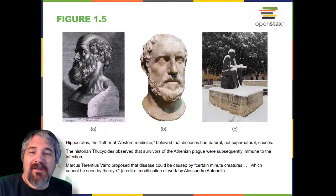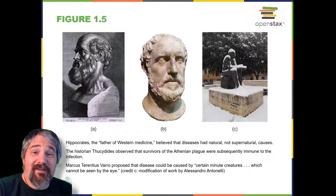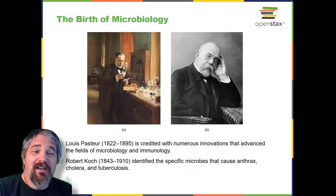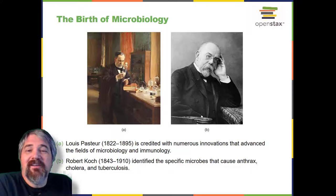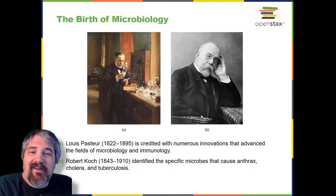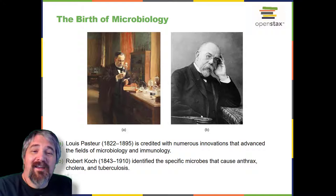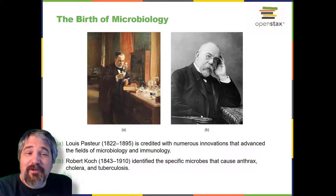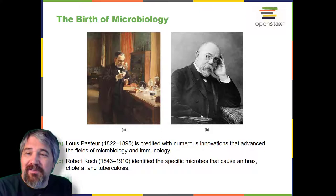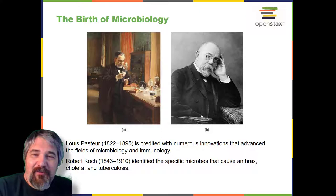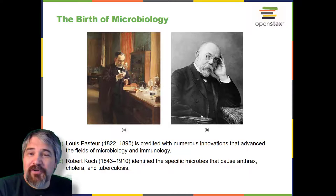Nearly 200 years after van Leeuwenhoek got his first glimpses of microbes, the golden age of microbiology spawned a host of new discoveries between 1857 and 1914. Two famous microbiologists — Louis Pasteur and Robert Koch — were especially active in advancing our understanding of the unseen world of microbes. Pasteur, a French chemist, showed that individual microbial strains had unique properties and demonstrated that fermentation is caused by microorganisms. He also invented pasteurization, a process used to kill microorganisms responsible for spoilage, and developed vaccines for diseases including rabies. Koch, a German physician, was the first to demonstrate the connection between a single isolated microbe and a known human disease — discovering the bacteria that cause anthrax, cholera, and tuberculosis.